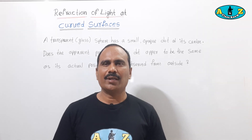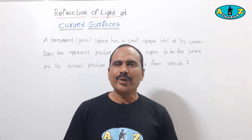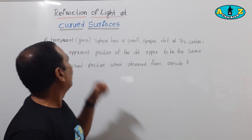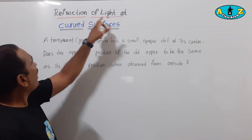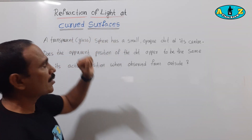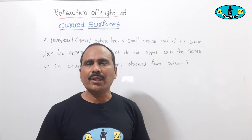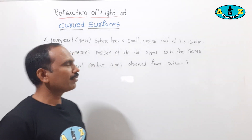Welcome to A to Z Classroom. Today's topic is refraction of light at curved surfaces, example question number 3. Observe the question.